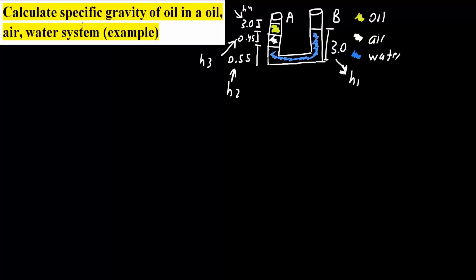In this problem, we will calculate the specific gravity of oil in an oil-air-water system. This is our system right here. This is oil, this is air, and this is water. This part right here is open to the atmosphere. We want to solve for the specific gravity of just oil.